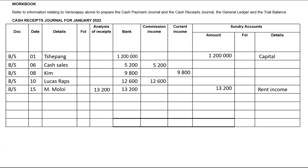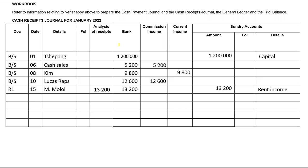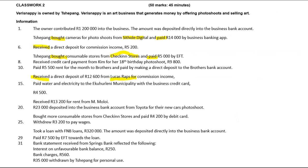23,000 was deposited into the business bank account from Toyota for their new cars shoot. Since we are receiving that money, it will be recorded in the cash receipts journal. We'll have BS, the date will be the 20th, we'll have Toyota, 23,000 under bank, and 23,000 under current income.